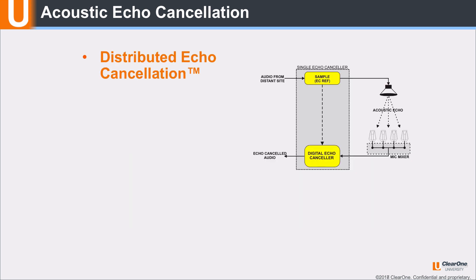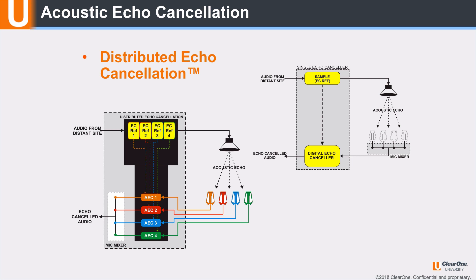Distributed echo cancellation. Traditionally, echo cancellation was done with single-channel echo cancelers, which used one echo canceler to cancel echo picked up by all microphones in a room. ClearOne's distributed echo cancellation assigns an acoustic echo canceler to each microphone. There are many advantages to distributed echo cancellation, including faster convergence, where each echo canceler only has to deal with the dynamics of the acoustic echo at its mic and not the composite of multiple mics.